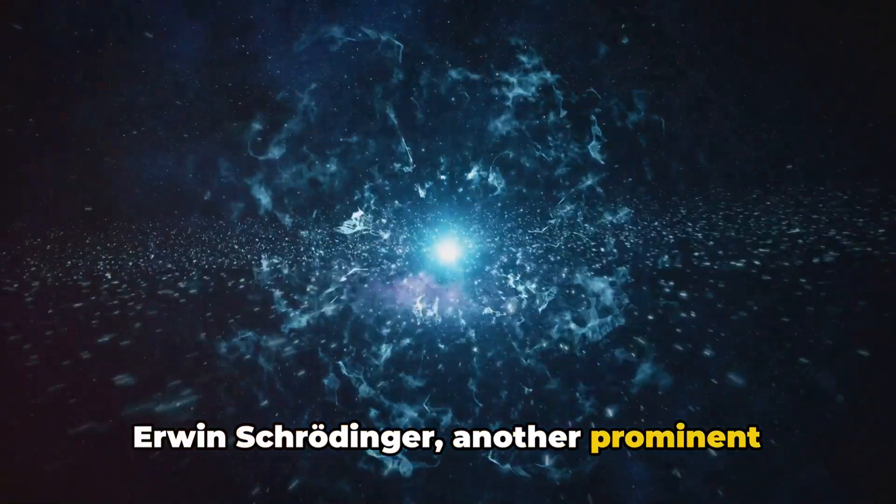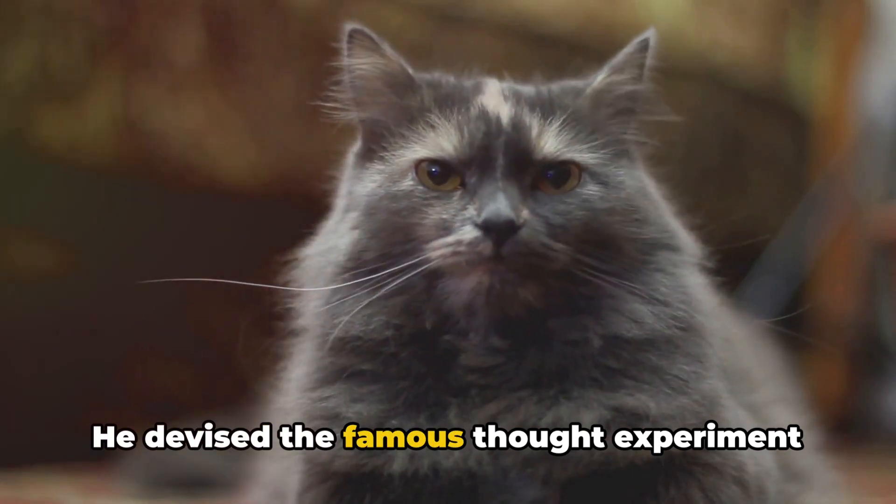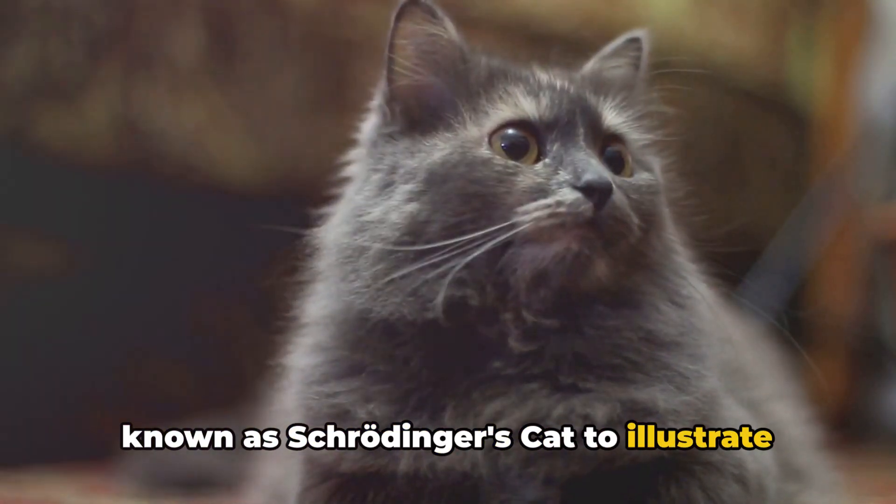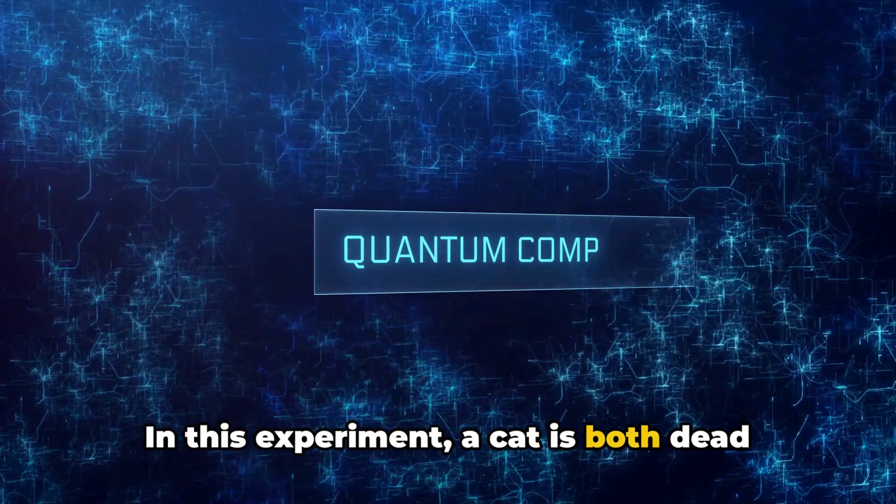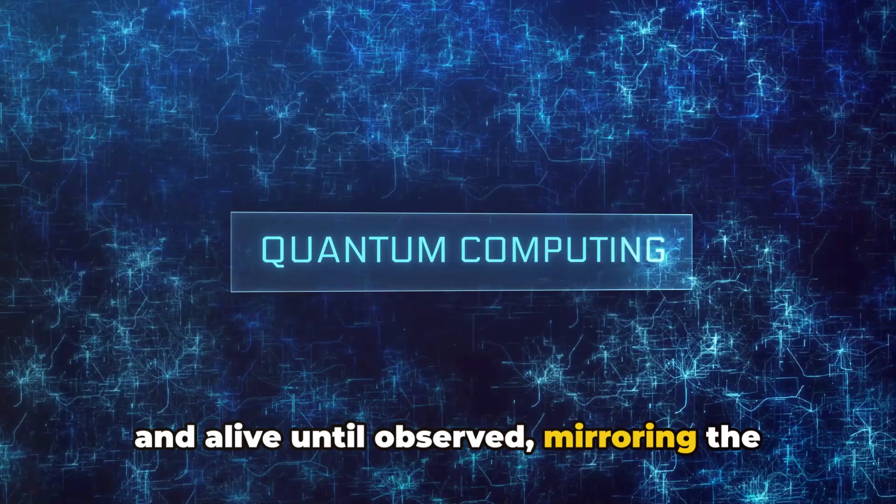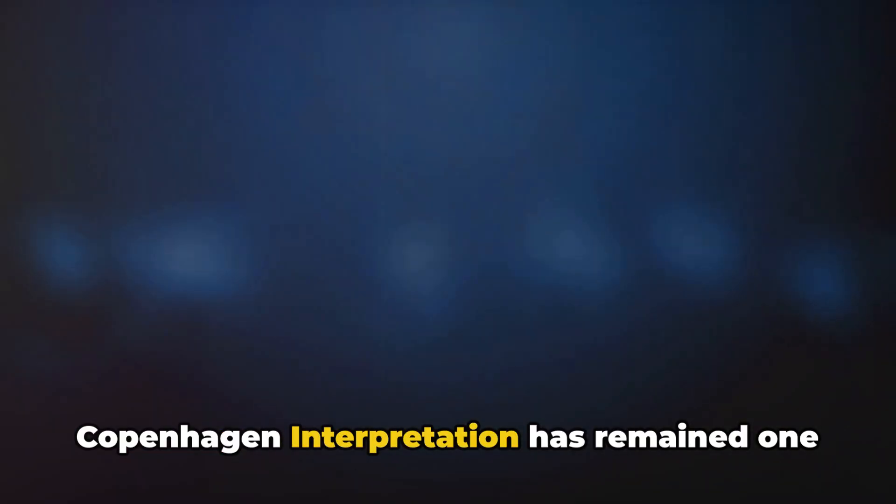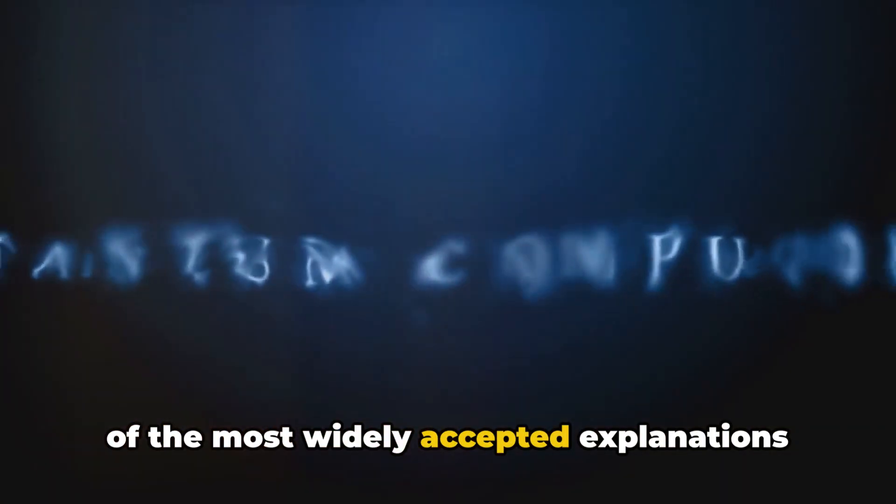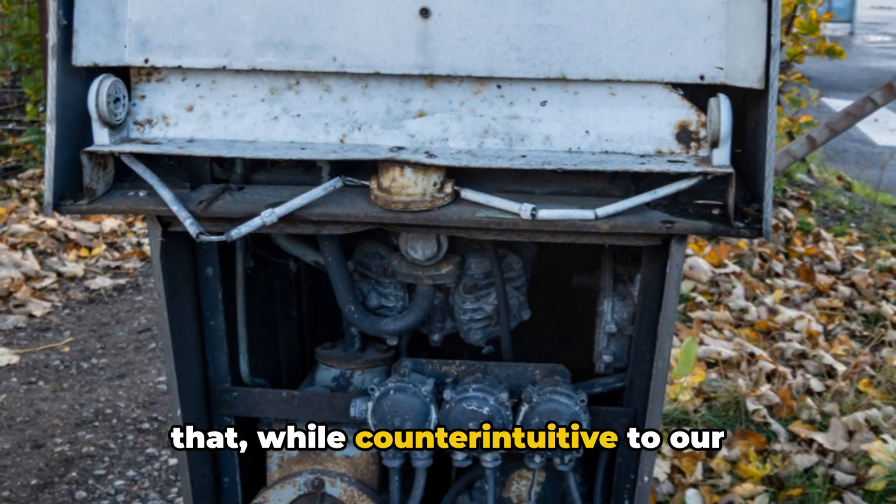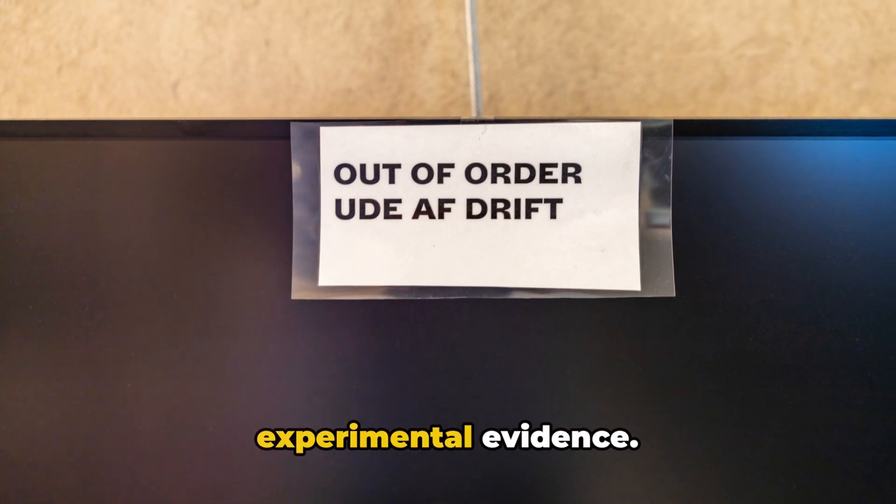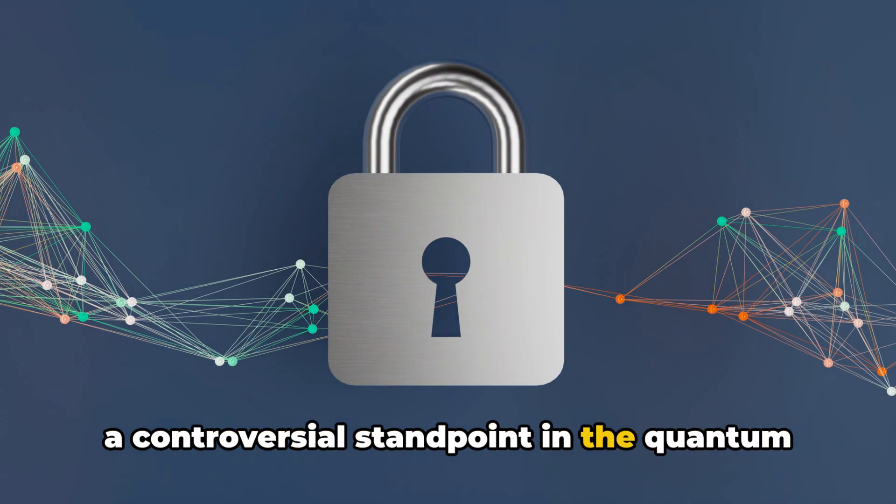Erwin Schrödinger, another prominent physicist, also expressed his doubts about the physical realism of quantum jumps. He devised the famous thought experiment known as Schrödinger's cat to illustrate the absurdity of the Copenhagen interpretation. In this experiment, a cat is both dead and alive until observed, mirroring the superposition of states in quantum particles. Yet, despite its detractors, the Copenhagen interpretation has remained one of the most widely accepted explanations of quantum mechanics. It provides an understanding of the world that, while counterintuitive to our everyday experiences, aligns with experimental evidence.